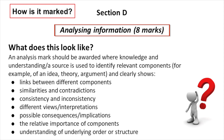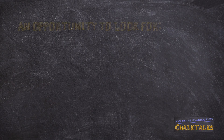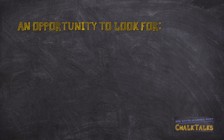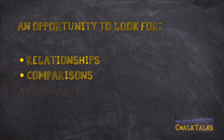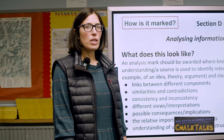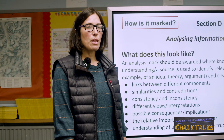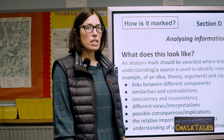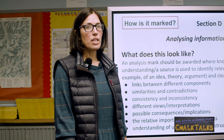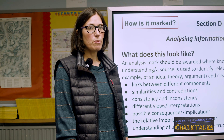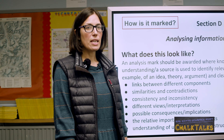Section D is about analysing your information and is worth eight marks. This is your opportunity to look for relationships, comparisons and contrasts between your data and to try and link it all together. You can bring in theory, your knowledge and understanding, and also your processed information to back up what you are saying.